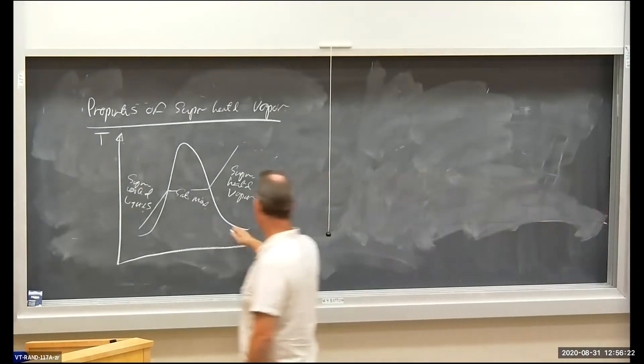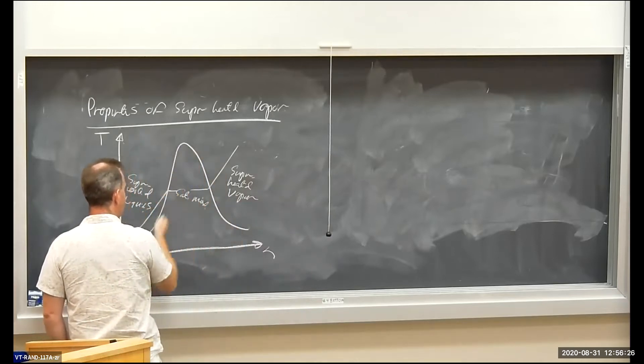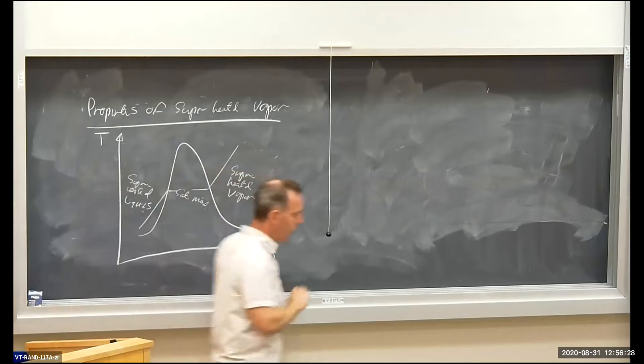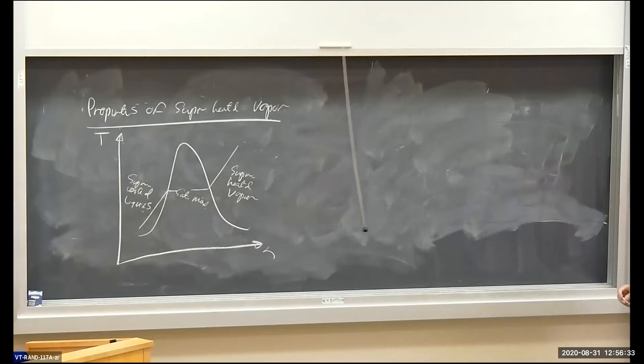Remember, it's saturated vapor on the right-hand side of the dome, saturated liquid on the left-hand side of the dome. And therefore, we're superheated if we're off to the right, the right side of the dome.